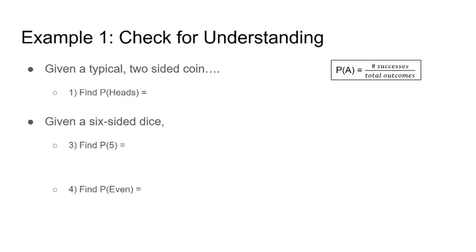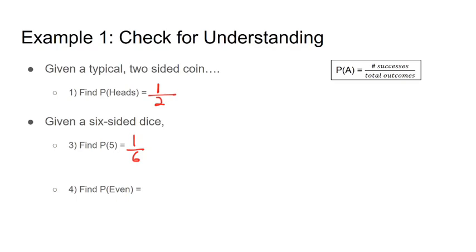Given a typical two-sided coin, the probability of heads is one success out of two total outcomes. Given a six-sided die, the probability of rolling a five is one out of six — not five out of six, since there's only one way to roll a five. For rolling an even number, the sample space is one through six, and there are three even numbers, giving three successes out of six possible outcomes, or one half.